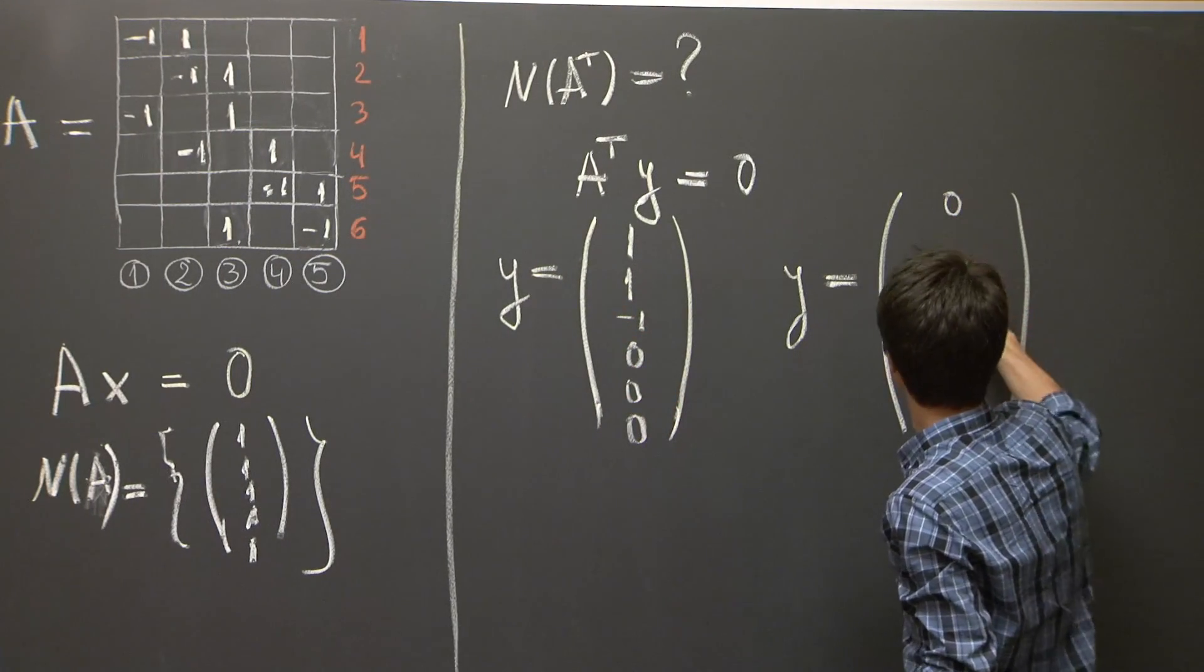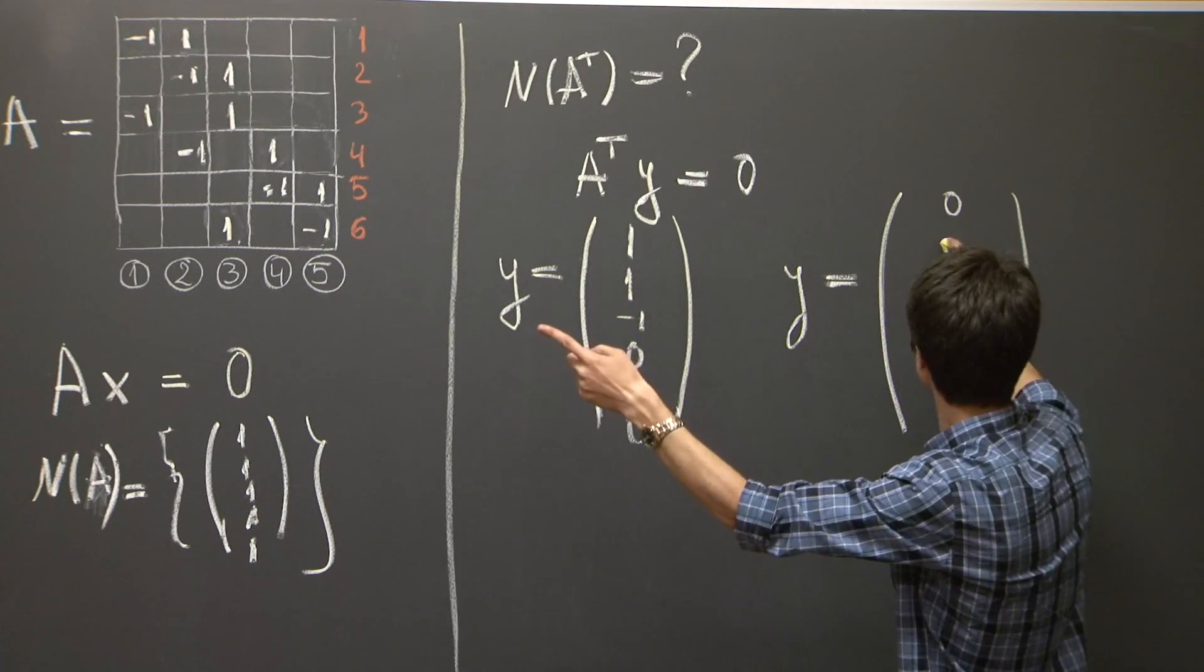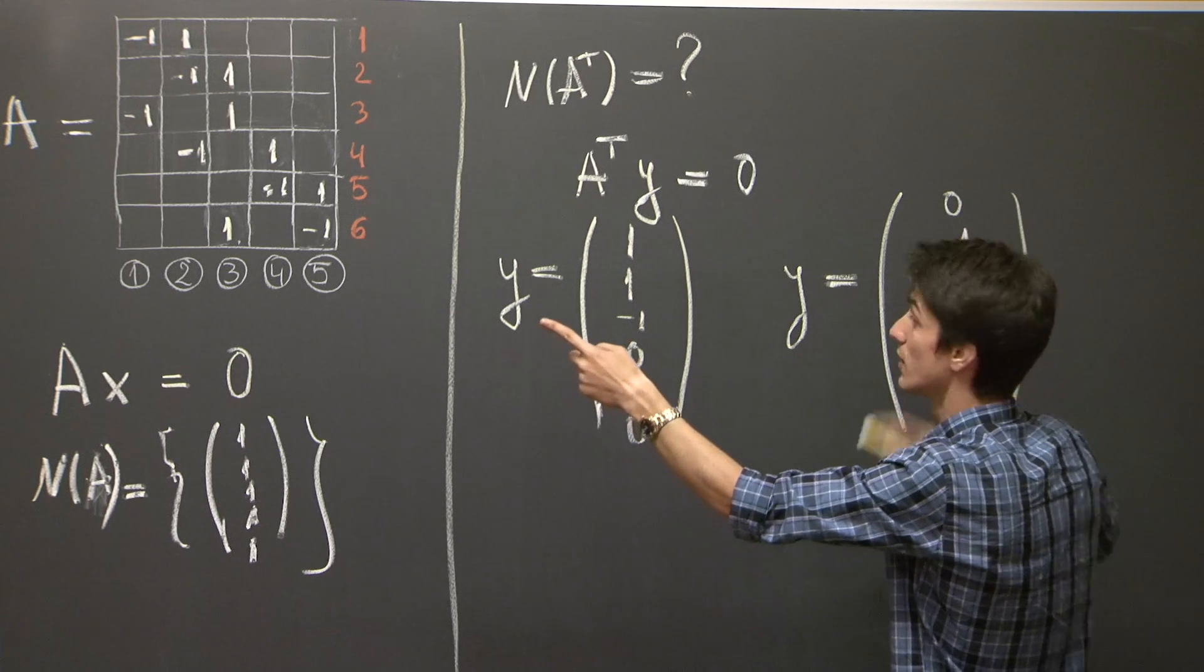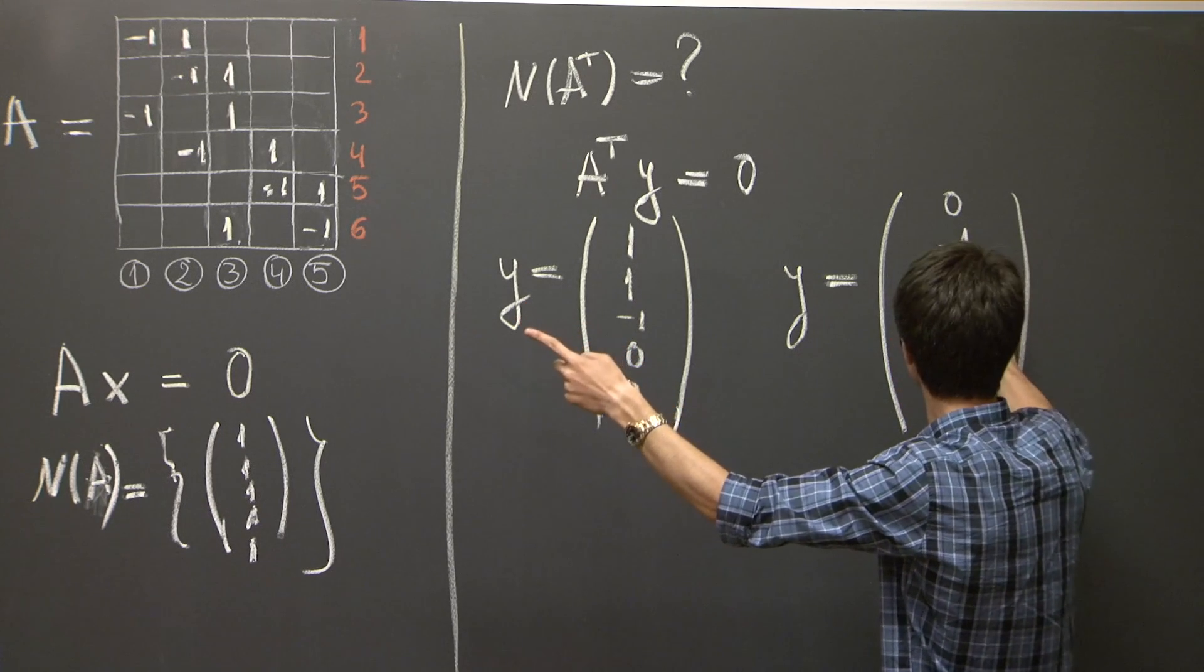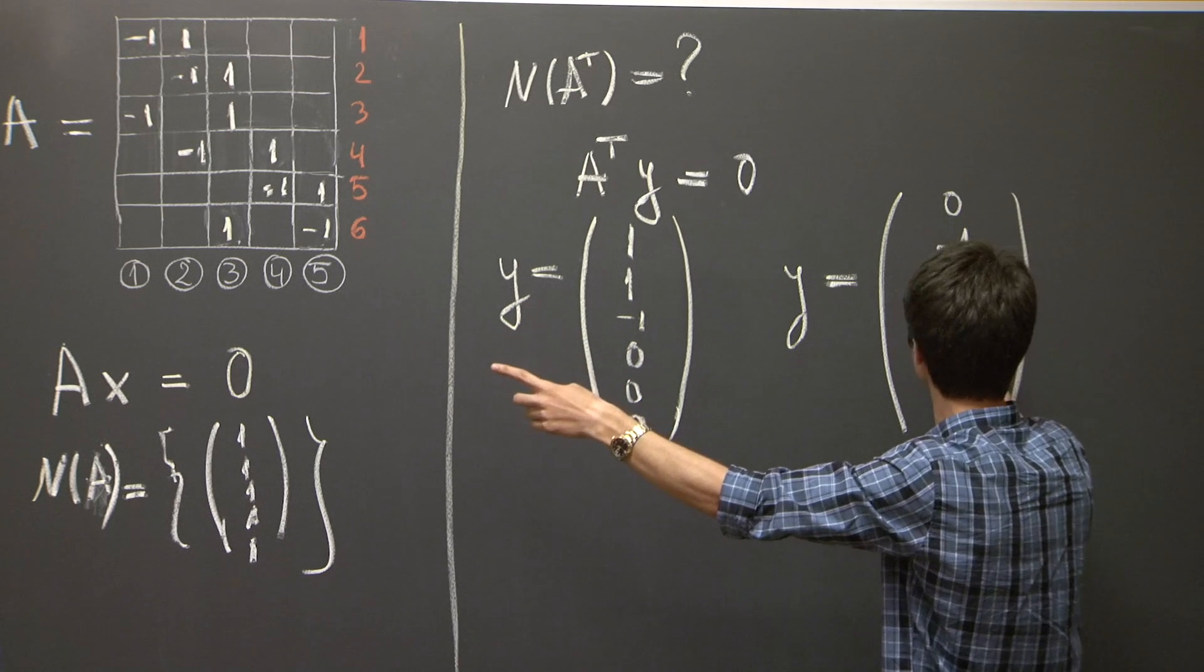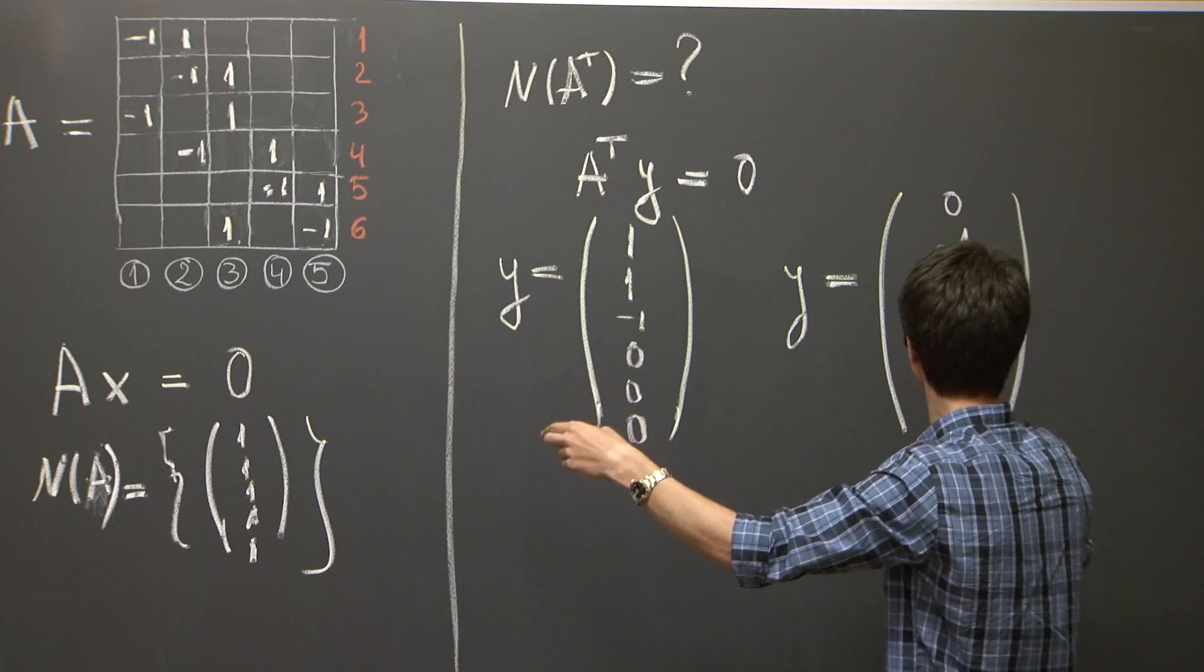So, there was 0, then along edge 2 was negative 1, along 3 0, along 4 1, along 5 1, along 6 1.